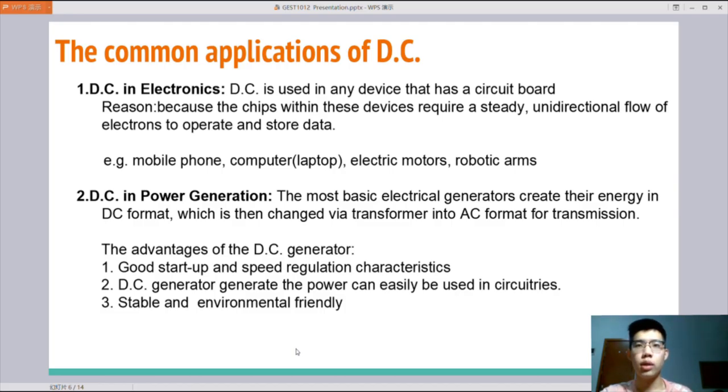DC could be used in any device that has a circuit board because the chips within these devices require a steady, unidirectional flow of electrons to operate and store data. The example of this application can be your smartphone and your computer. Even when you look at your laptop charger, you should know that it is an adapter that converts AC to DC. Thus, most electronic products in our lives are powered by DC power.